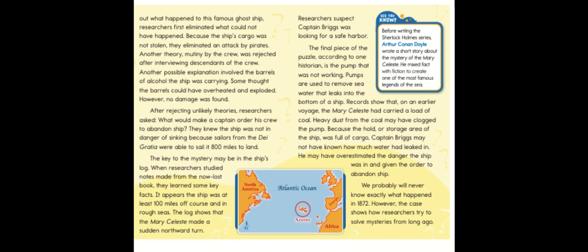Another explanation involved the barrels of alcohol the ship was carrying — some thought they could have overheated and exploded — however, no damage was found. After rejecting unlikely theories, researchers asked what would make a captain order his crew to abandon ship. They knew the ship was not in danger of sinking because sailors from the De Gratia were able to sail it 800 miles to land. The key to the mystery may be in the ship's log: it appears the ship was at least 100 miles off course and in rough seas, and the log shows the Mary Celeste made a sudden northward turn.